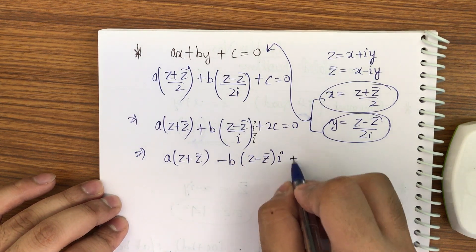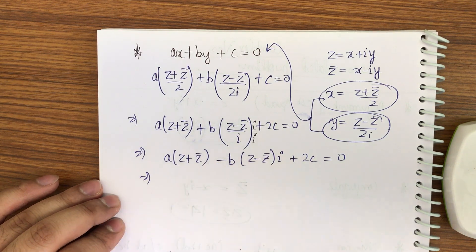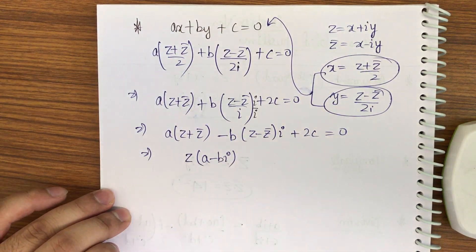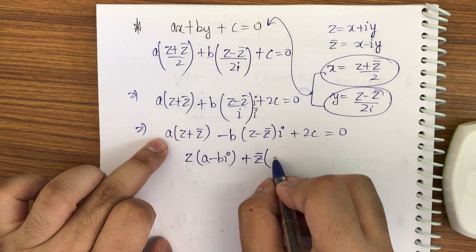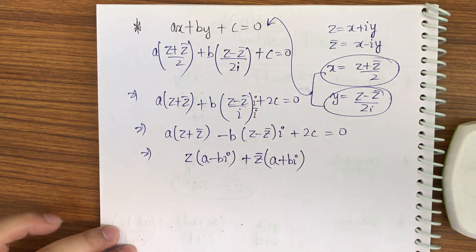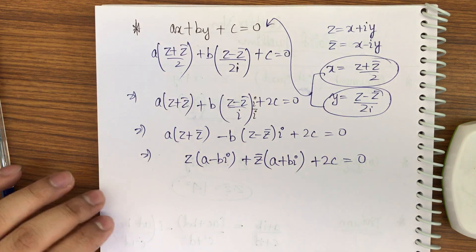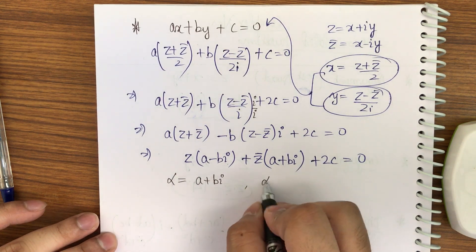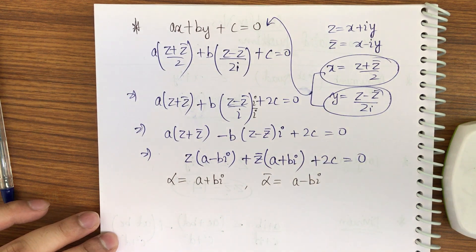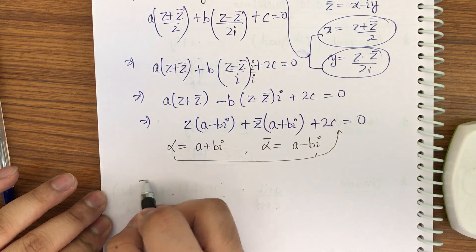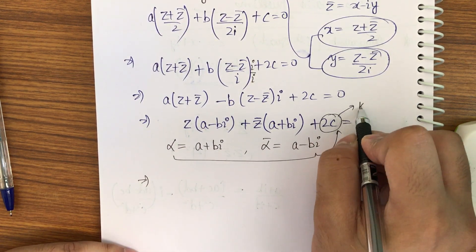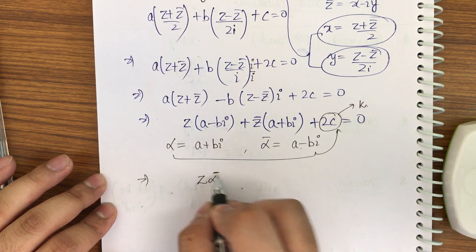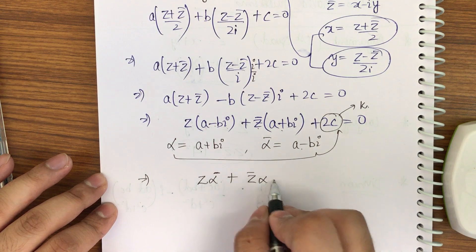Now collect z terms together: z(a - bi) + z̄(a + bi) + 2c = 0. Let α = a + bi be a complex number, so its conjugate ᾱ = a - bi. Taking 2c as a constant k, the equation becomes z·ᾱ + z̄·α + k = 0. This is the converted form of the straight line equation from coordinate geometry to complex numbers.